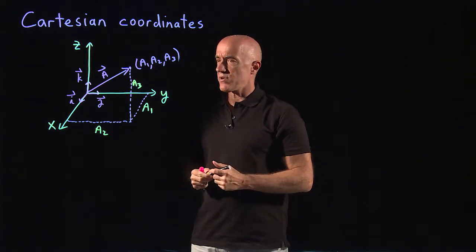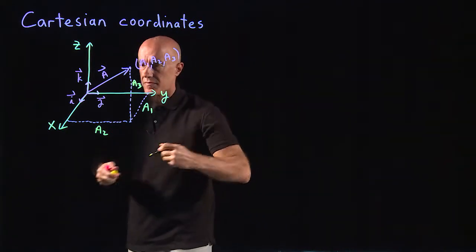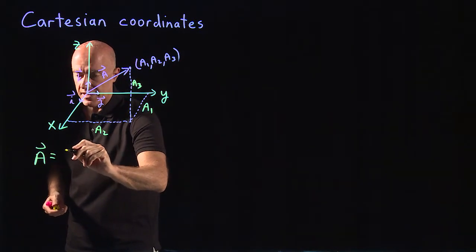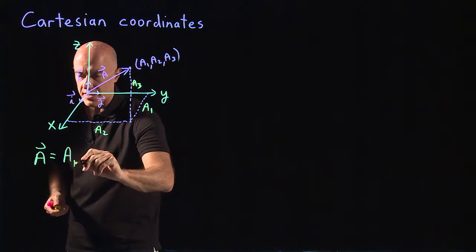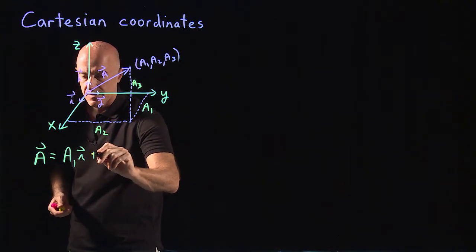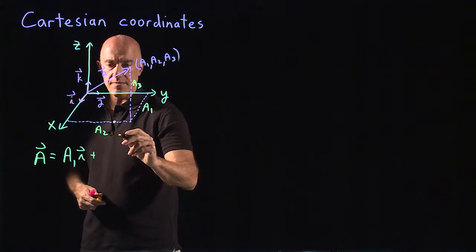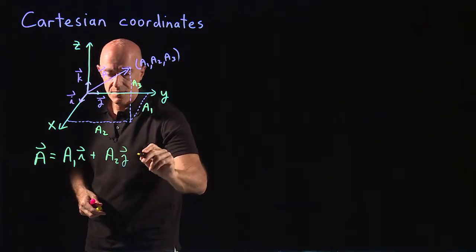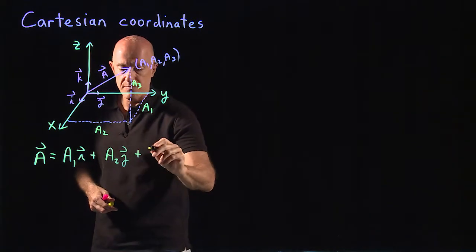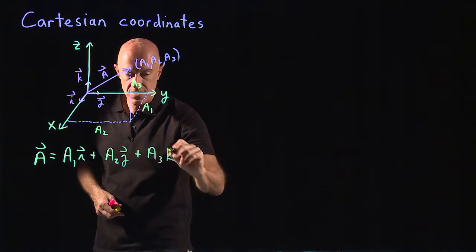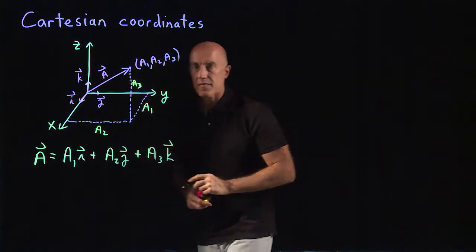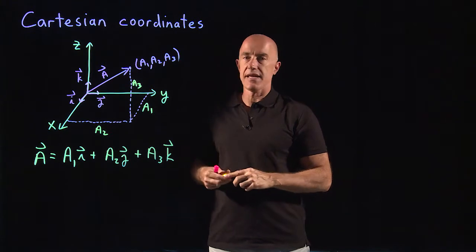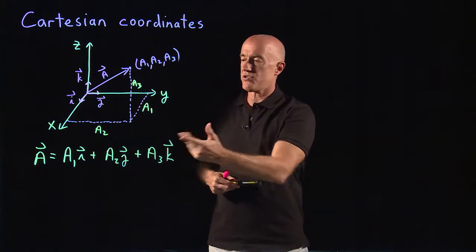So how do we write a vector? We write the vector a as the x component, a1 times i, plus the y component, a2 times j, plus the z component, a3 times k. So that's the coordinate representation of an arbitrary vector a.